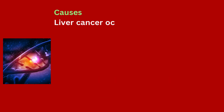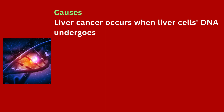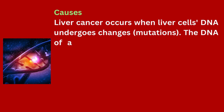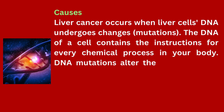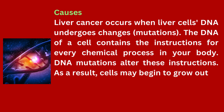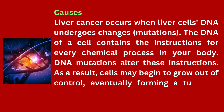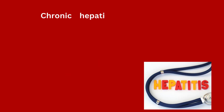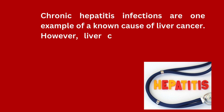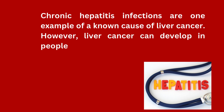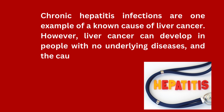Liver cancer occurs when liver cells' DNA undergoes changes, called mutations. The DNA of a cell contains the instructions for every chemical process in your body. DNA mutations alter these instructions, causing cells to grow out of control and eventually form a tumor — a mass of cancerous cells. Chronic hepatitis infections are one known cause of liver cancer; however, liver cancer can also develop in people with no underlying diseases, in which case the cause is unknown.